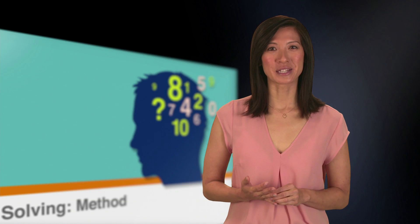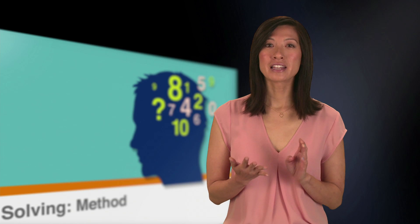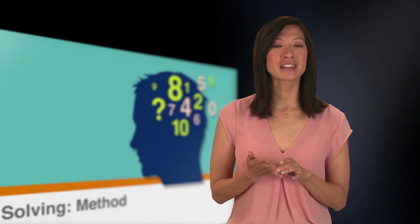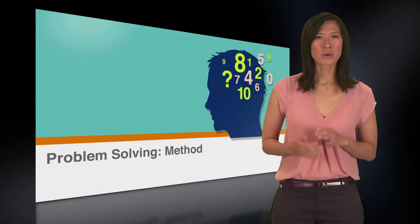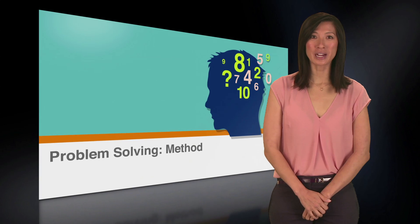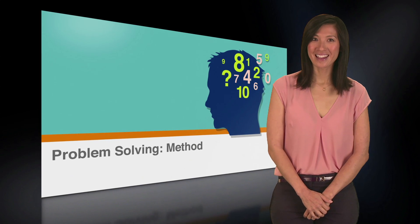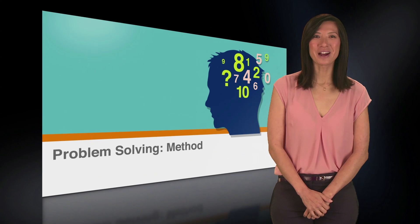So in this lesson, we learned about the different types of quantitative reasoning problems and an effective method to solve them. Make rewriting the question mathematically, solving strategically, and checking the answers your go-to practice as you study for the GRE. Remember, if you have enough time during the section, it's a good idea to check your answers by plugging them back in. Good luck, and now get on with your practice.